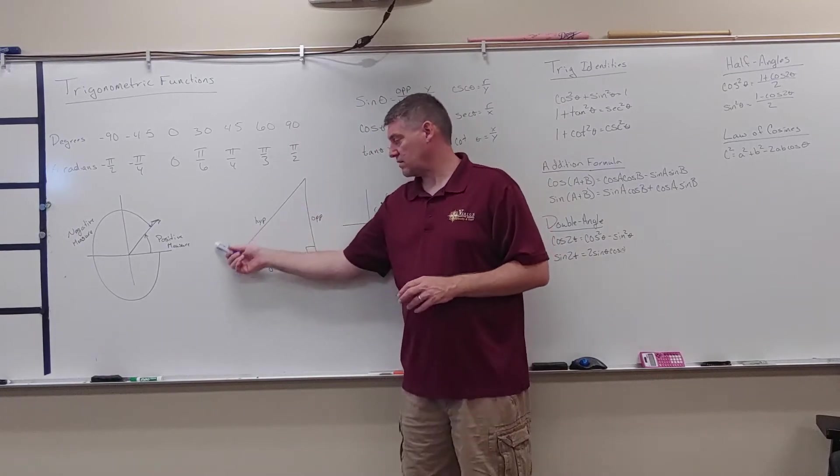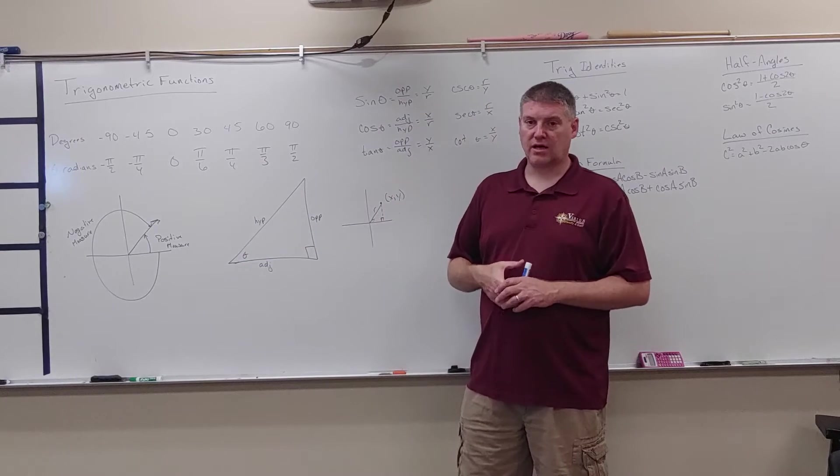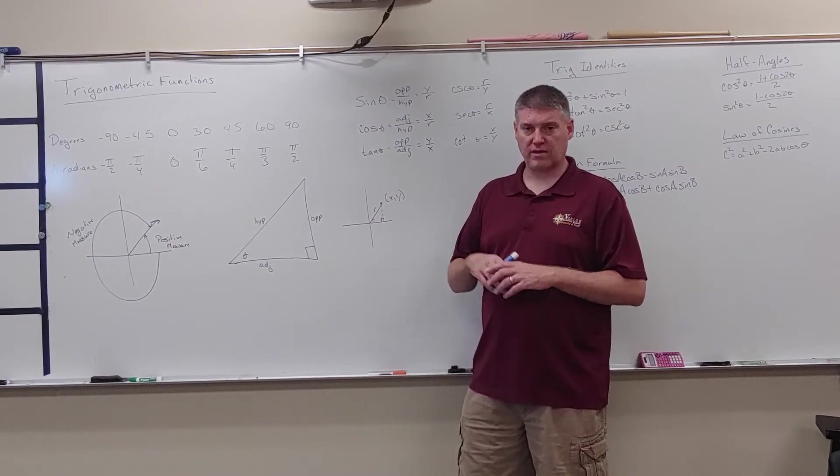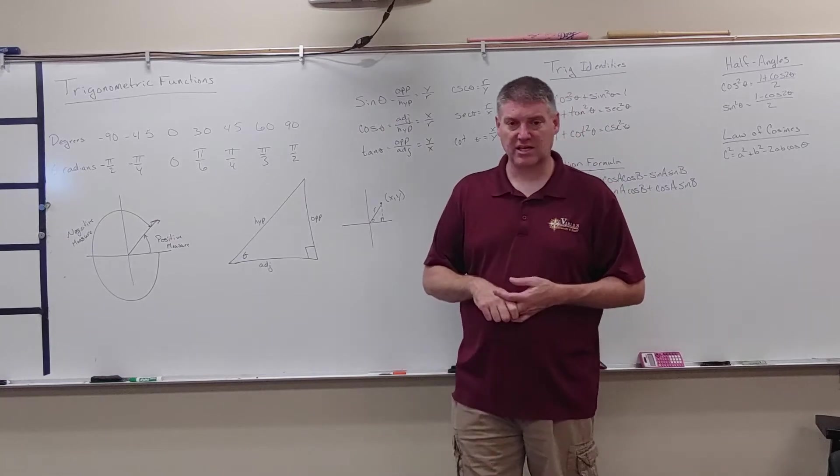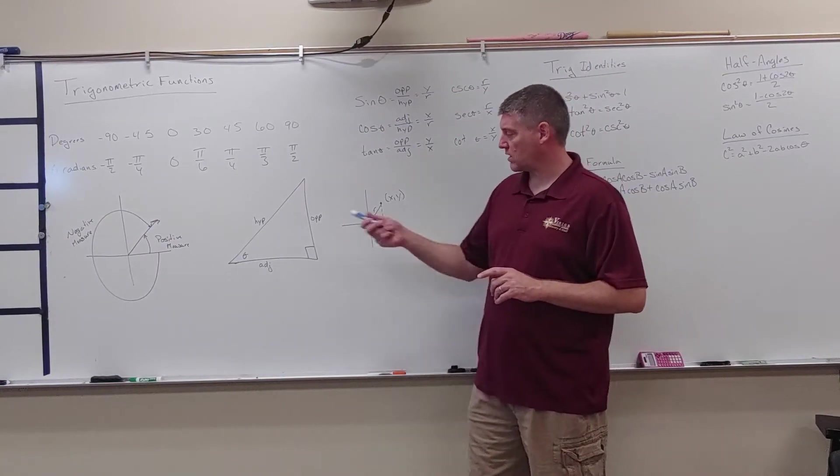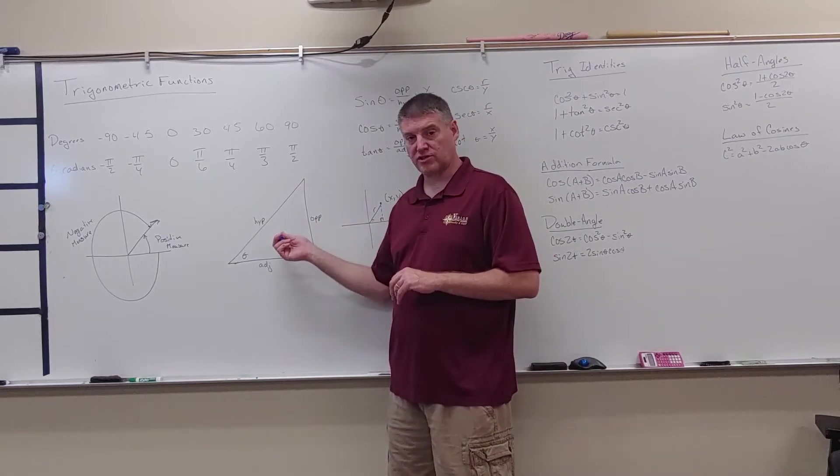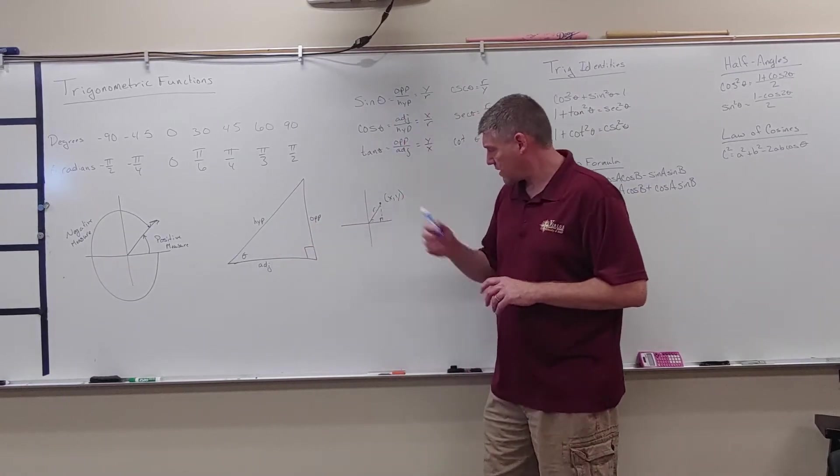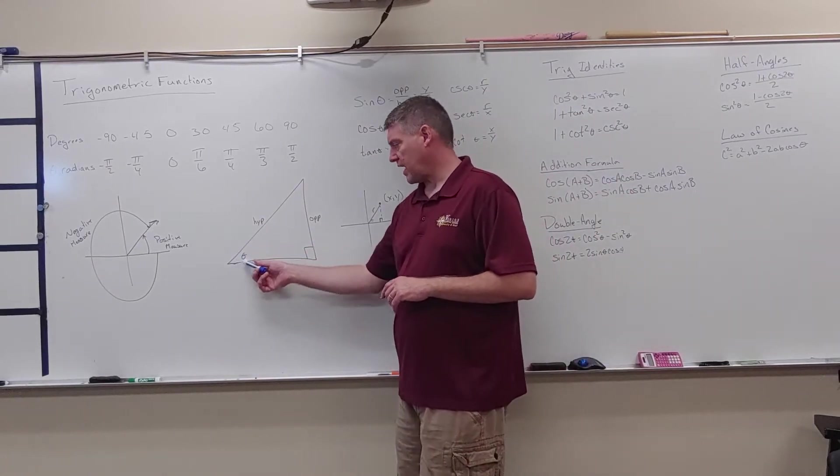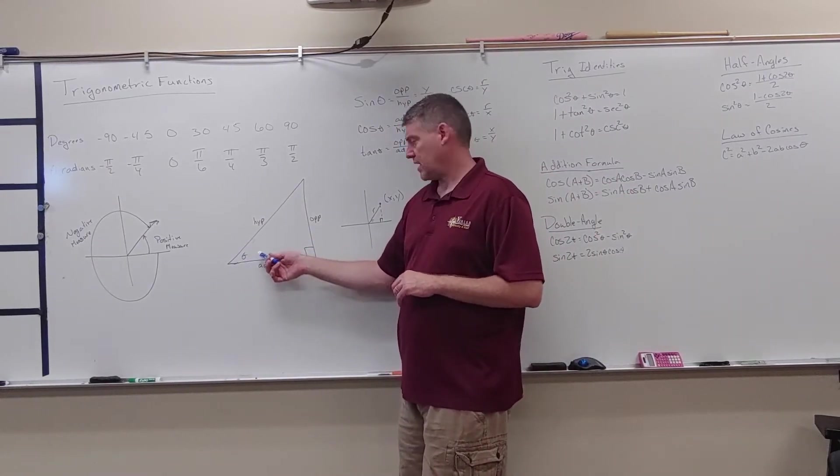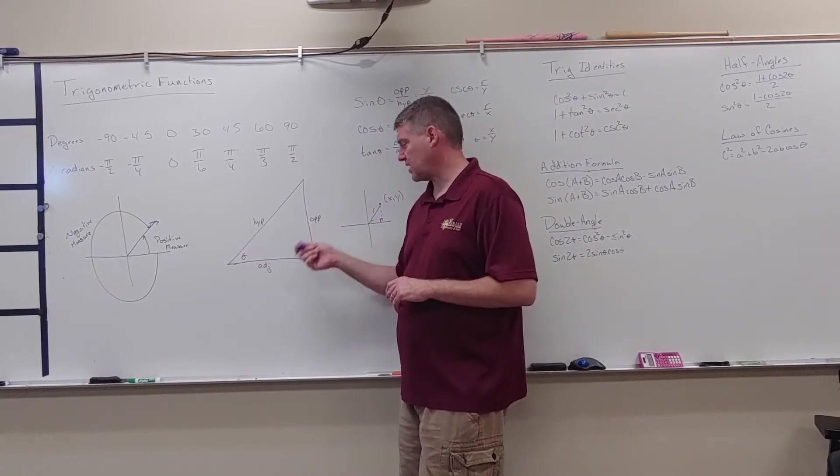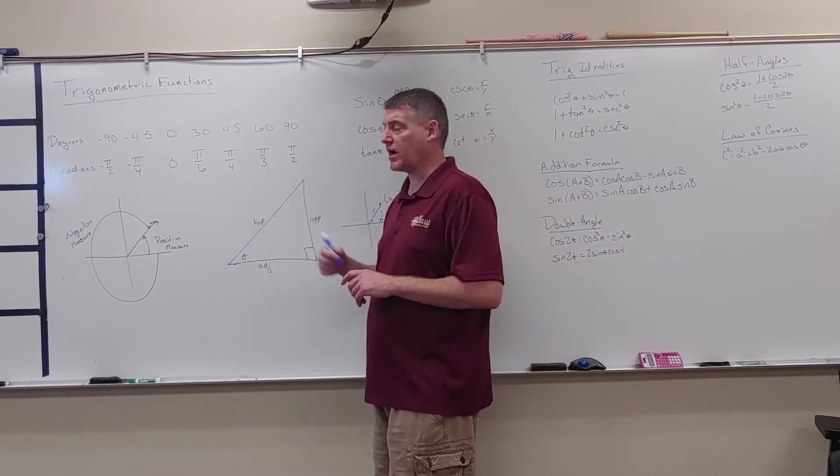We're going to be looking at the six trig functions that we know: sine, cosine, tangent, cosecant, secant, and cotangent. We're going to look at them based on a traditional right triangle and a value in the coordinate plane. In our right triangle here, I have this angle theta. With regards to this angle, I have an opposite side, an adjacent side, and a hypotenuse.